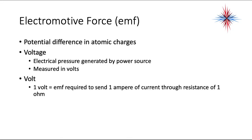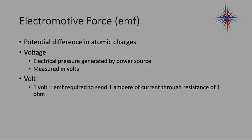Electromotive force is the potential difference in atomic charges. Voltage is EMF, it's electrical pressure generated by a power source, measured in volts. A volt is the amount of electronic force that's required to send one amp of current through resistance of one ohm. Current is the flow of electrons, measured in amps. One amp is one coulomb per second. A coulomb is an electrical charge in 6.24 times 10^18 electrons. Current is the flow of electrons, measured in amps.